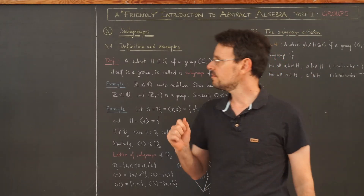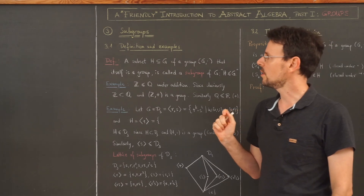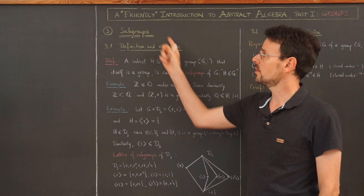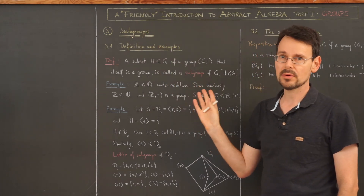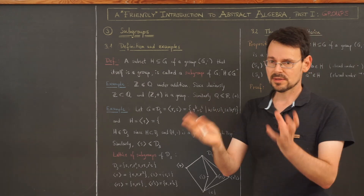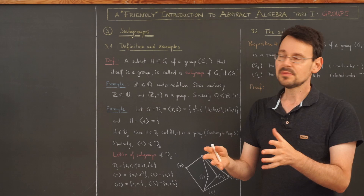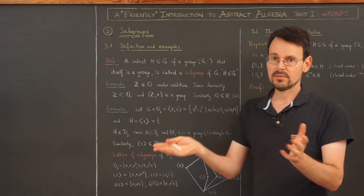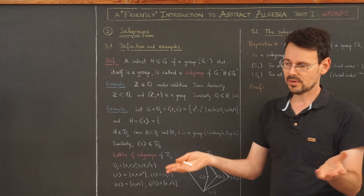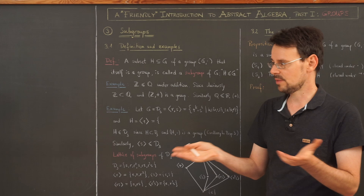Welcome everybody to lesson 5 of a friendly introduction to abstract algebra, part one: groups. In today's video you are going to learn about the concept of a subgroup. This is a common theme in algebra — whenever you have some algebraic structure, one studies the substructures. For example, if you know about vector spaces you study subspaces; if you have an algebra you study sub-algebras; if you have a ring there's the concept of a subring.